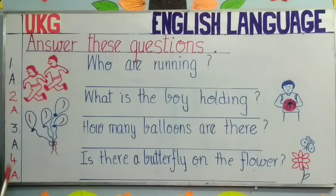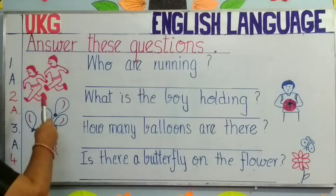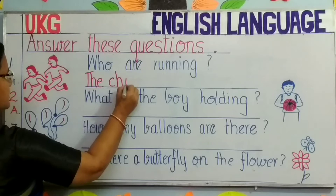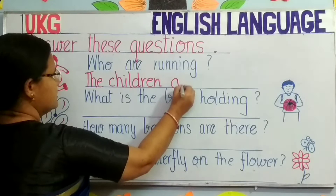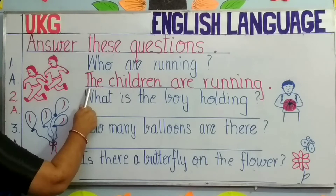Number 1: Who are running? Look at this picture, children. Who can you see? There are two children. And what are they doing? They are running. You will also see on the board, there are two children and both of them are running. So you will write: The children are running. Begin with a capital letter, end with a full stop.